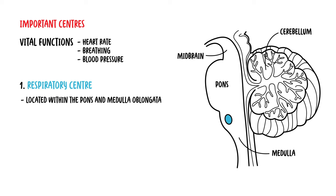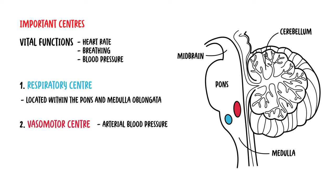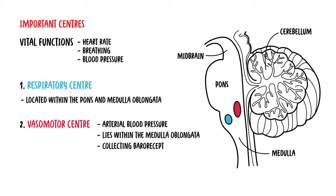The respiratory center is a group of nuclei located in the pons and the medulla oblongata. The vasomotor center, which is important in controlling blood pressure, also lies within the medulla oblongata and is responsible for collecting information from the body, which can then influence heart rate and other vital functions.